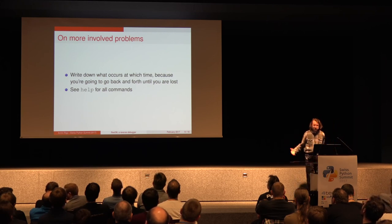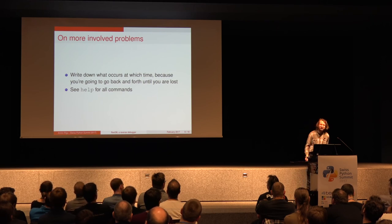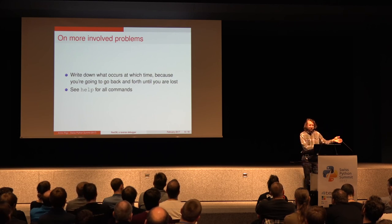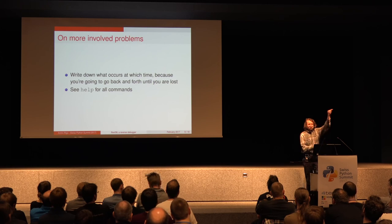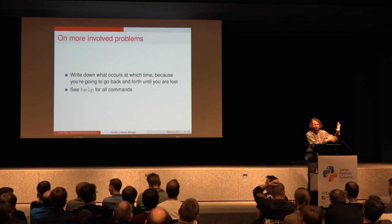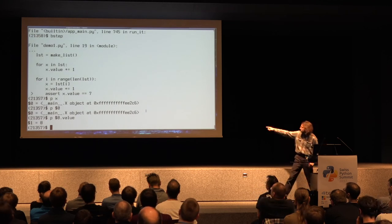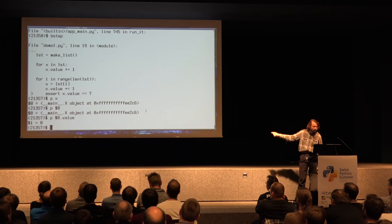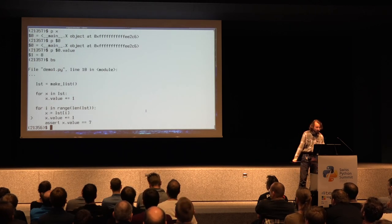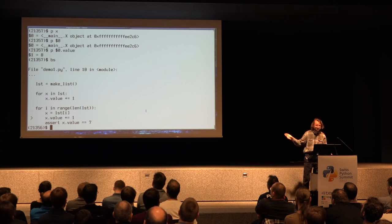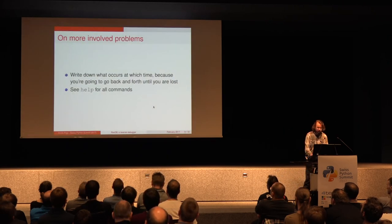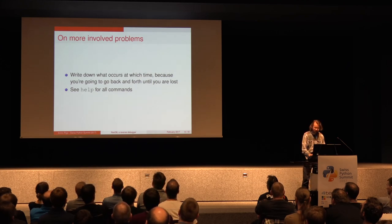With a larger example, what you want to do is write down in a separate file the things that occur in your program, and keep that file ordered by time. Because you're going to go back and forth all the time and you can get very easily completely lost. The number on the left of the prompt, before the dollar sign, is the time precisely — like if I do bstep, it decreases by one. There's also a built-in help command with a list of all commands.